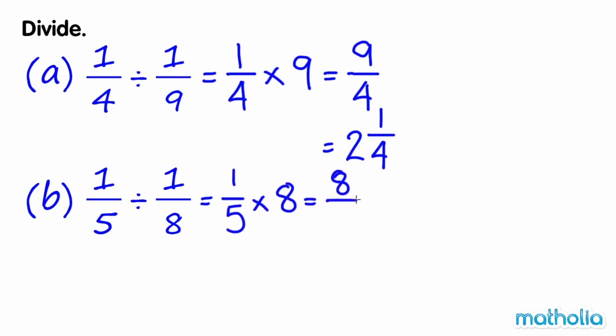Eight-fifths is an improper fraction that can be written as one and three-fifths. So, one-fifth divide one-eighth equals one and three-fifths.